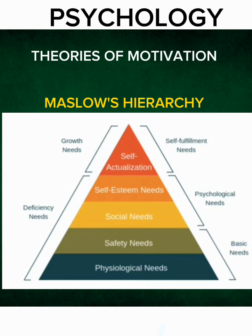At the top of the hierarchy is self-actualization — the highest level of fulfillment. It describes a situation where one feels fulfilled and believes they are doing what they are meant to do. Maslow acknowledged that only a few people ever achieve this level of self-actualization. The main idea is that you attain a need at the bottom of the hierarchy before proceeding to the next level.